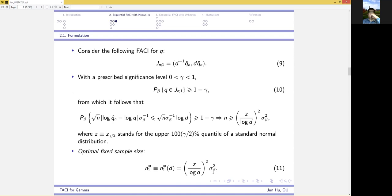and we define it to be the optimal fixed sample size. Denoted by n1 star, it has the magnitude c over log of d squared times sigma beta squared.